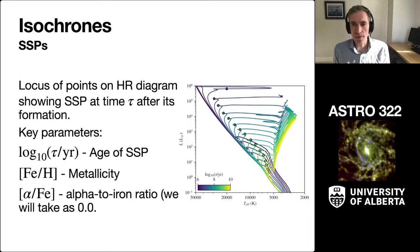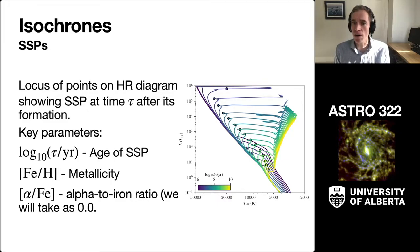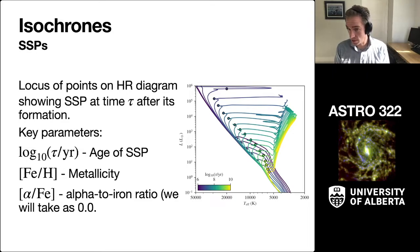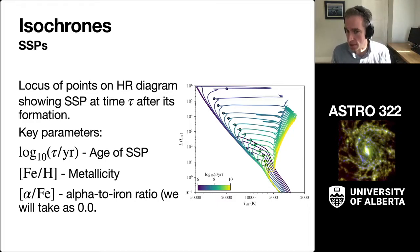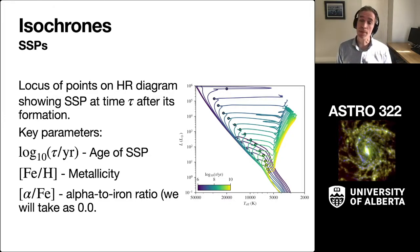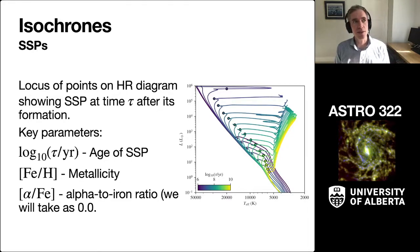These are isochrones generated using theoretical stellar evolutionary tracks. They are the points on the HR diagram — either in the luminosity-temperature diagram or the color magnitude diagram — that show a simple stellar population at a time tau after its formation. There are really three ingredients that go into this stellar population. The first, of course, is the age.